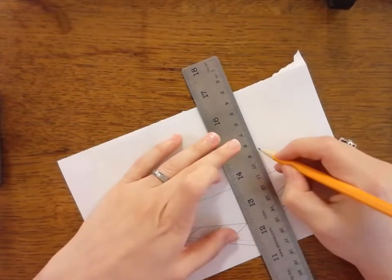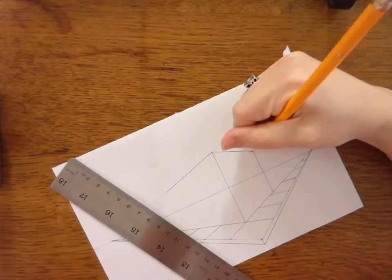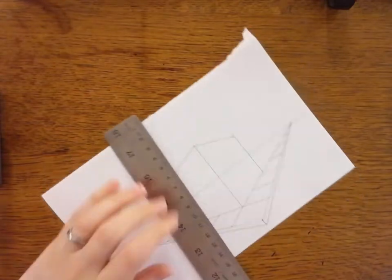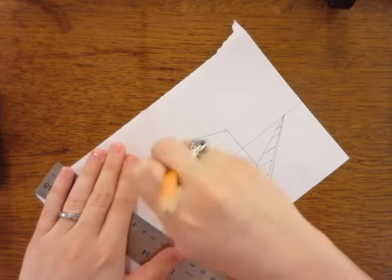Right about here, connect that over. Make it a little bit skinnier on this side, and then you erase out all the lines that I don't need.